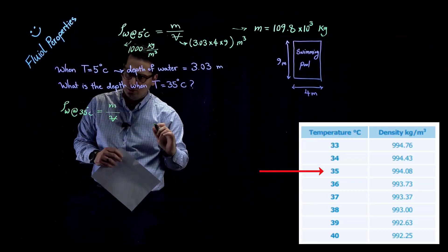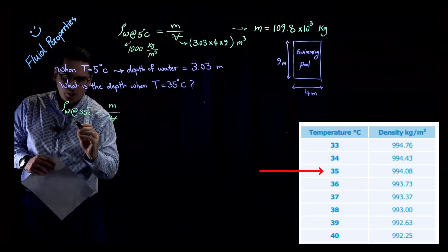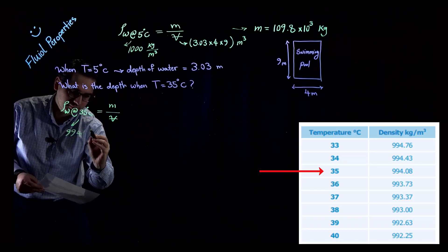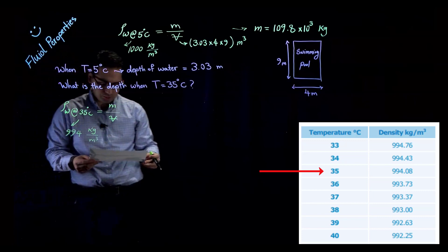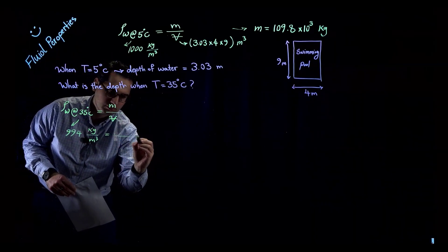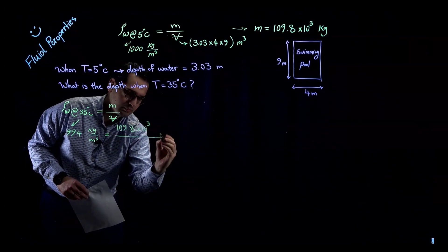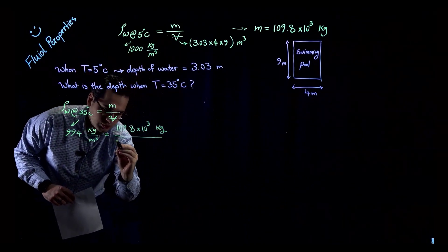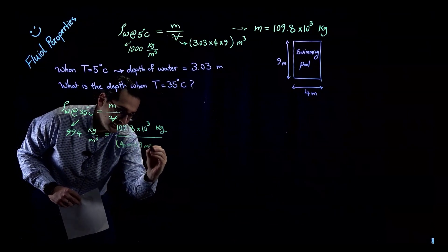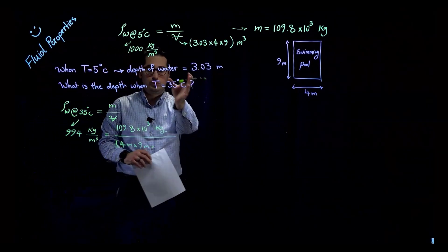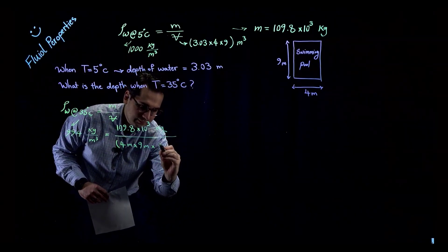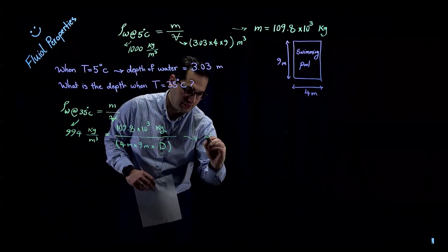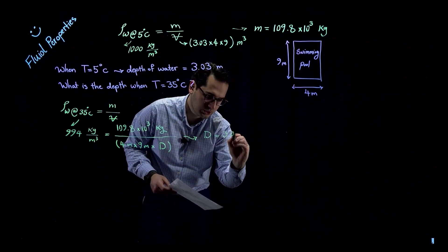Using a table, the density of water at 35 degrees Celsius is 994 kg/m³. Setting density equal to mass over volume, where volume = 4 × 9 × D, the width and length don't change — only the depth changes due to thermal expansion. Solving for the only unknown D gives a depth of approximately 3.05 meters.